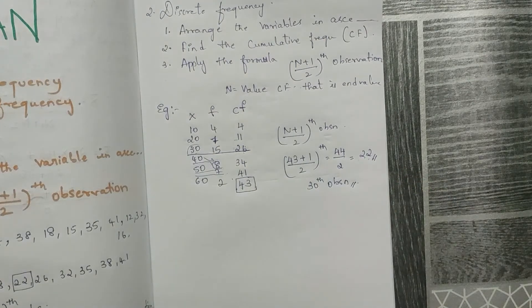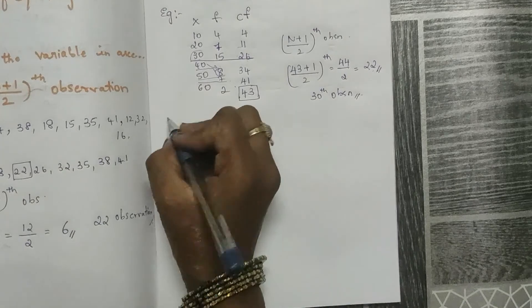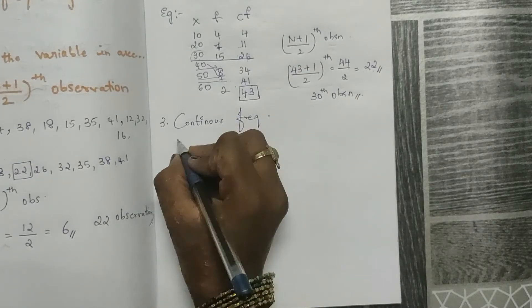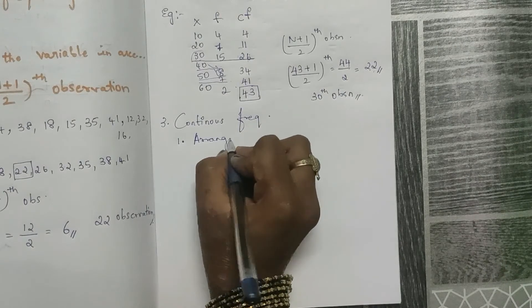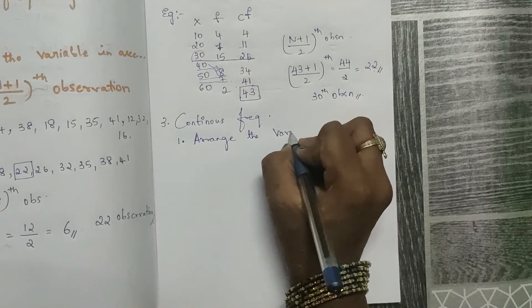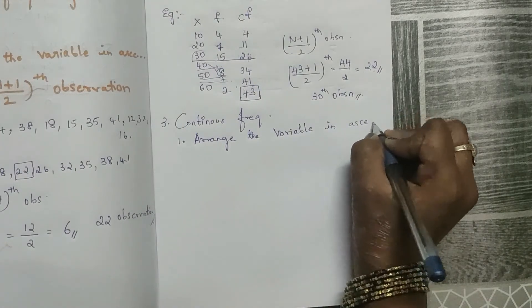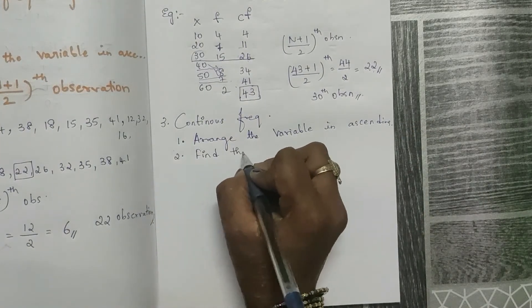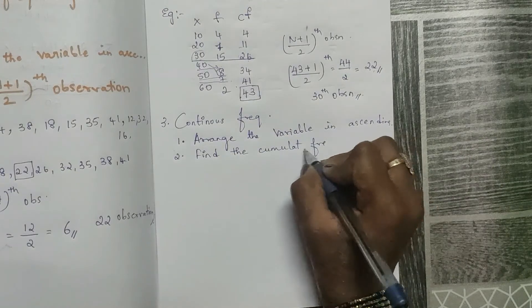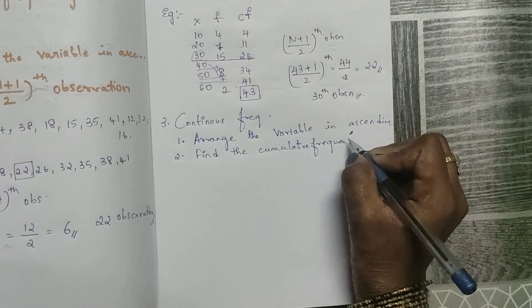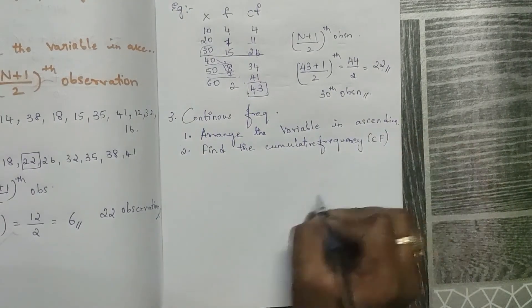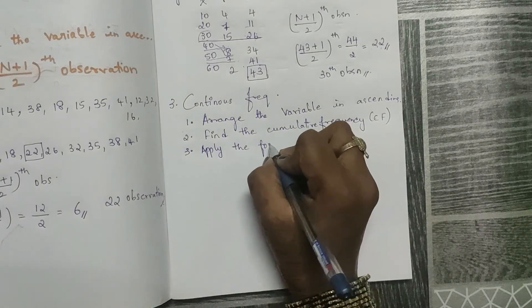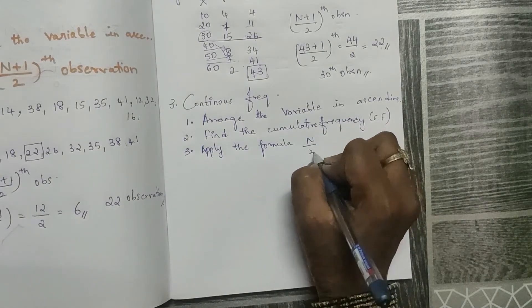This is how you solve discrete frequency. Now let's move on to continuous frequency. The rules are: first, arrange the variables in ascending order; second, find the cumulative frequency (CF); third, apply the formula — find n/2 th observation, then look into the cumulative frequency to identify the median class.